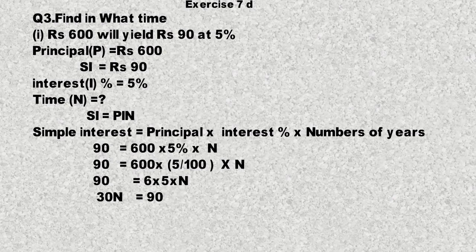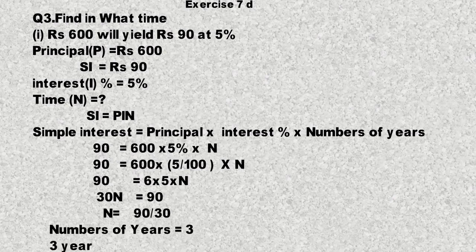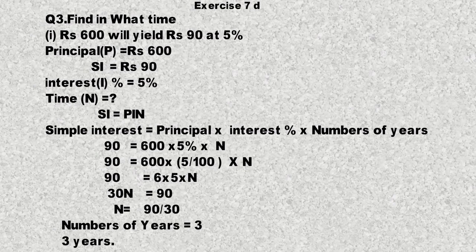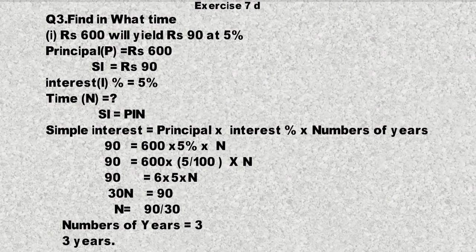30n = 90، تو n = 90/30 = 3۔ n یعنی number of years = 3 سال۔ جواب 3 years آجائے گا — یہی ہم نے find کرنا تھا۔